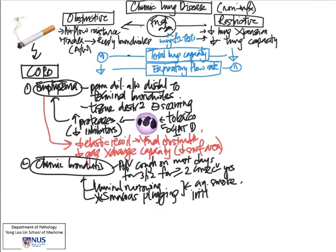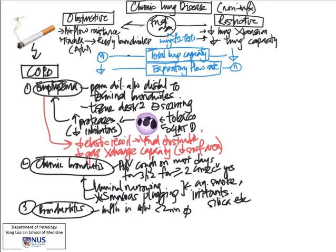Chronic bronchitis can be caused by inhaled irritants such as tobacco in cigarette smoke, as well as certain minerals such as silica. The next entity, also one of the chronic obstructive pulmonary diseases, is bronchiolitis, which affects the smaller airways. It is defined as inflammation within airways that are less than 2 millimeters in diameter, and it can also be caused by inhaled irritants or air pollutants. There is usually accompanying scarring as well as narrowing of the airways, giving rise to obstruction.